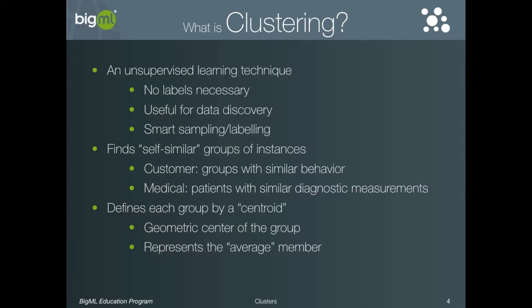The number of centroids that define the cluster, which is referred to as the K value, can either be specified by you or determined by the clustering process. For example, if you are working with customer data and you know that you want to segment your customers into three groups, you would specify K equals three. However, if you have no idea how many groups to use, you can ask the clustering algorithm to determine the best K for your specific dataset.